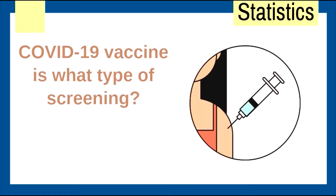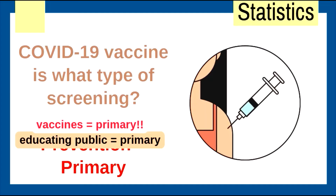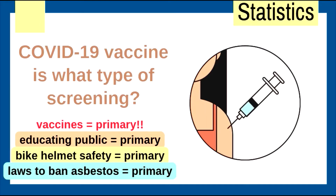COVID-19 vaccines — what type? Well, remember, vaccines are all about prevention. Prevention equals primary. Vaccines are primary. Educating the public is primary. Bike helmet safety is primary. And laws to ban asbestos are primary — because there's no disease yet, and we want to prevent its onset.